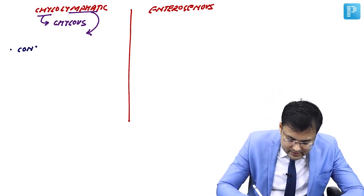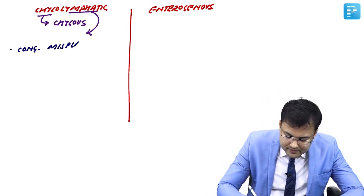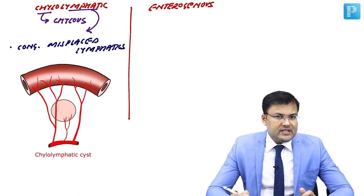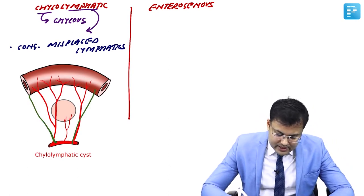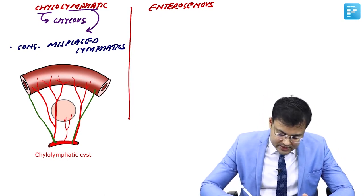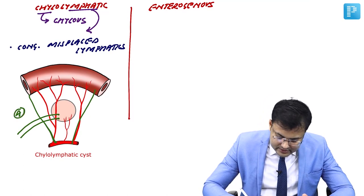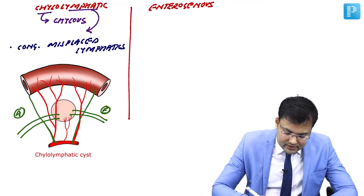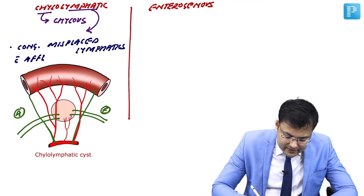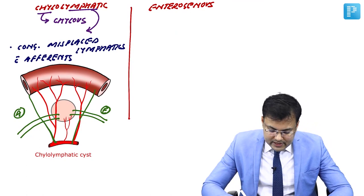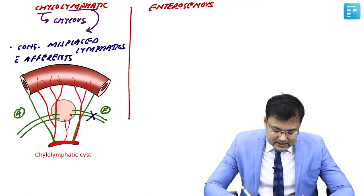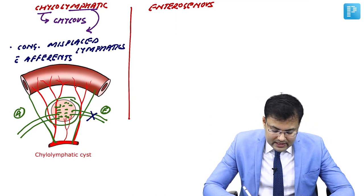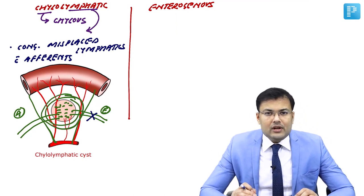It is characterized by congenitally misplaced lymphatics. Mesentery is the lymphovascular supply of the bowel. Here you can see there are afferent lymphatics and efferent lymphatics. The problem is congenitally misplaced lymphatics with afferents only — no efferents. Because of the afferent, chyle keeps coming and starts collecting in the mesentery, and slowly there is enlargement of the swelling, leading to formation of chylo-lymphatic cyst.